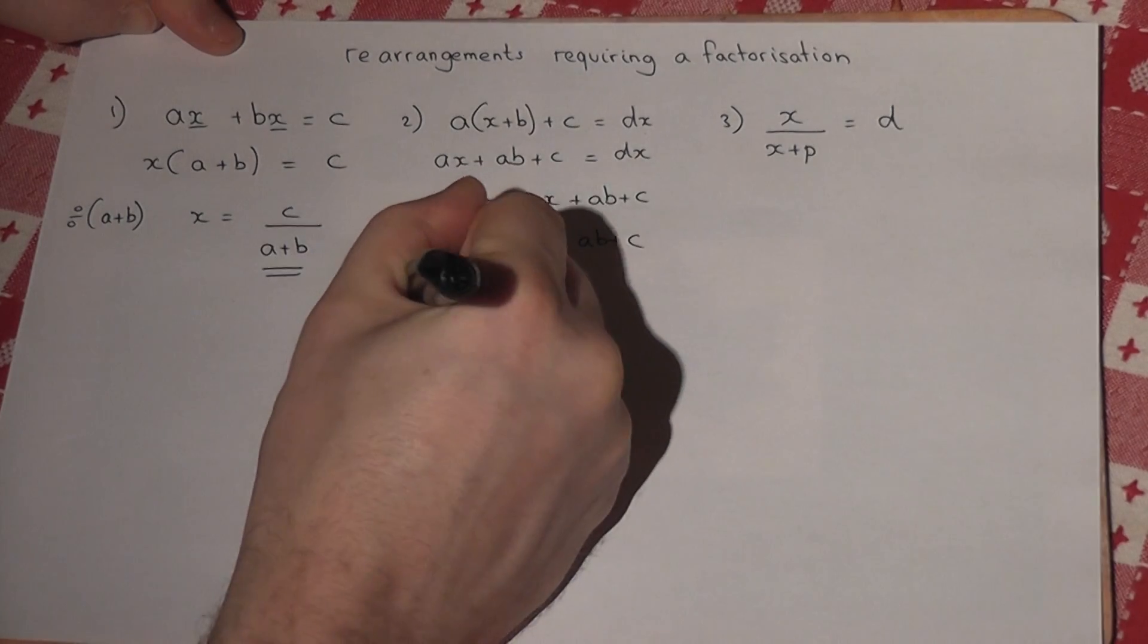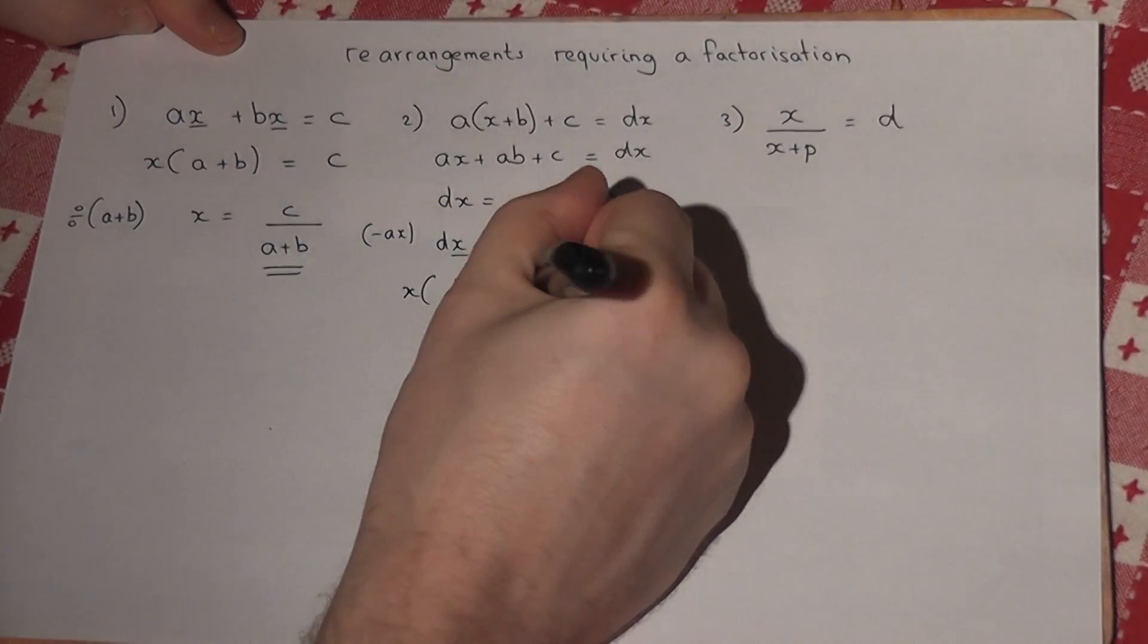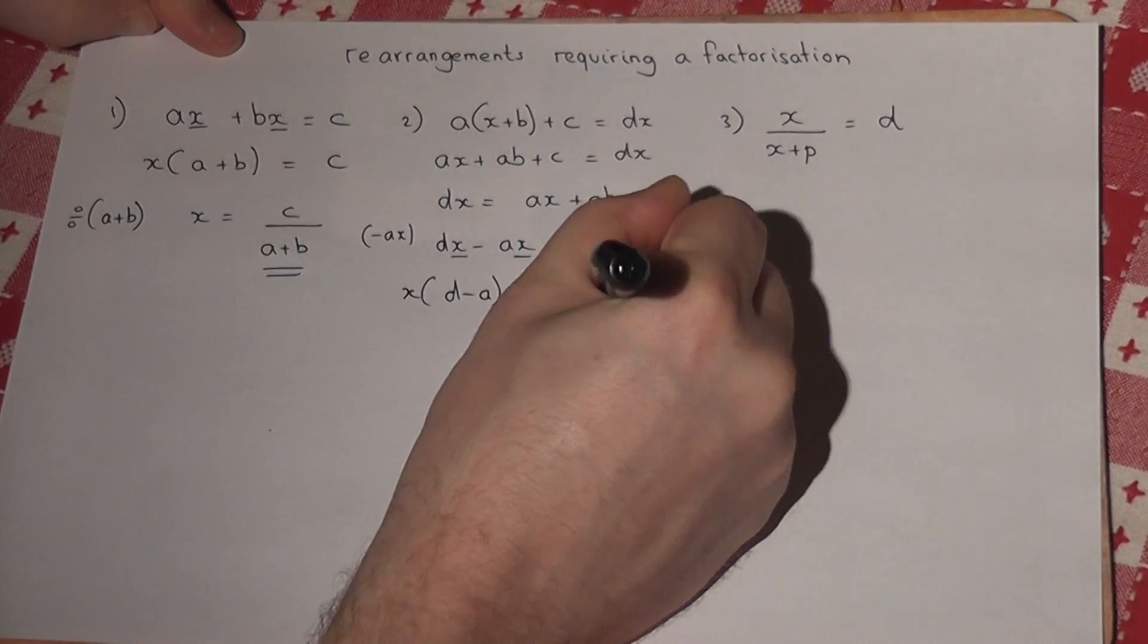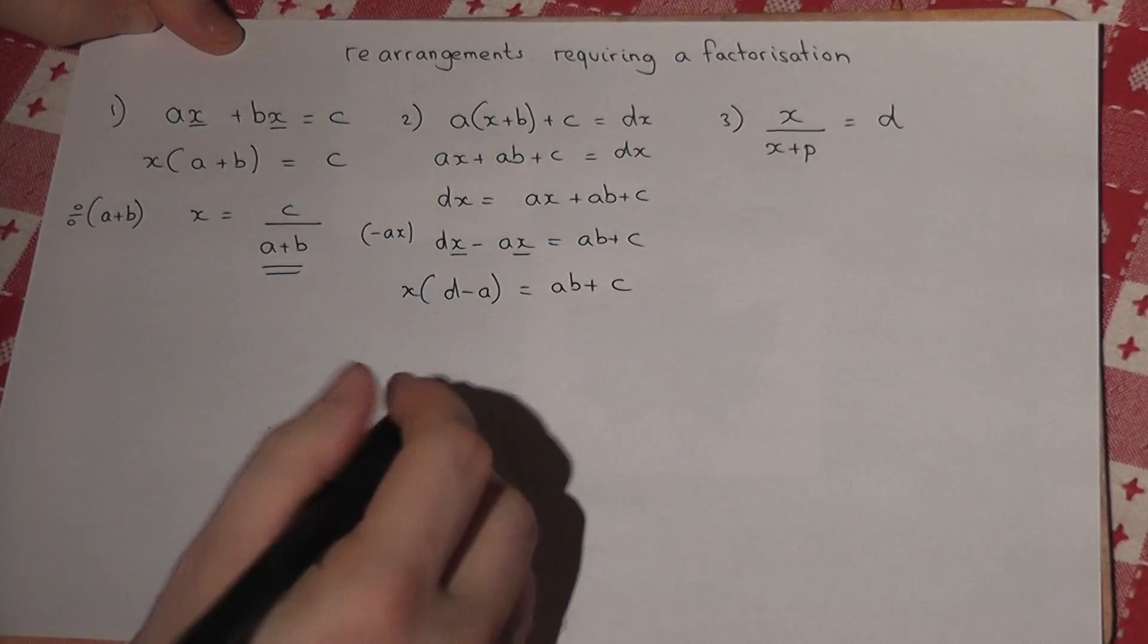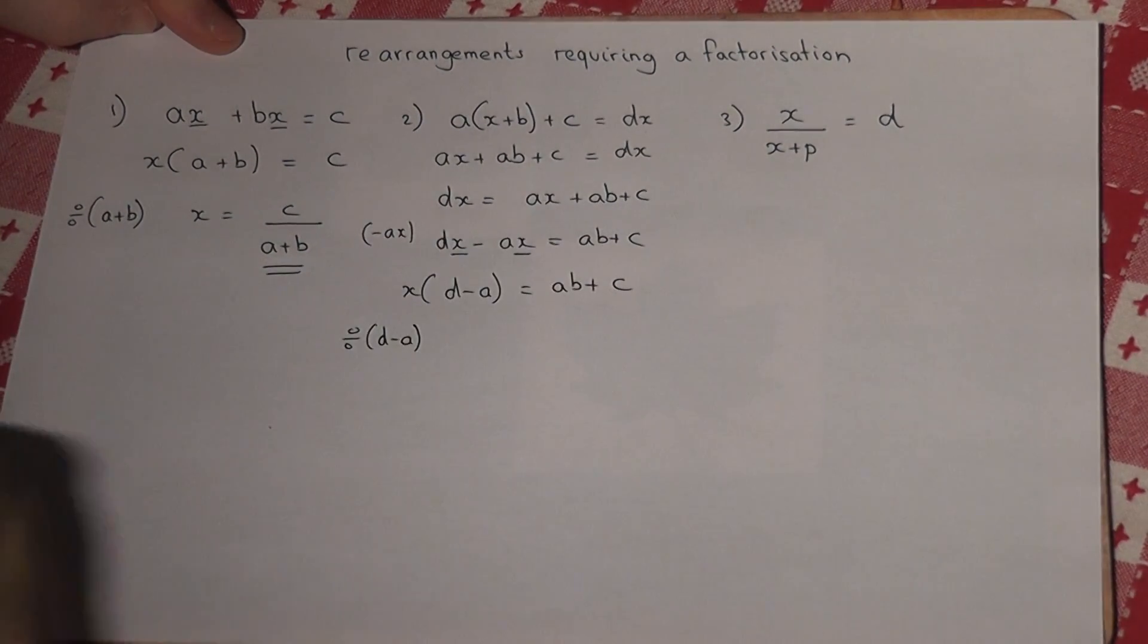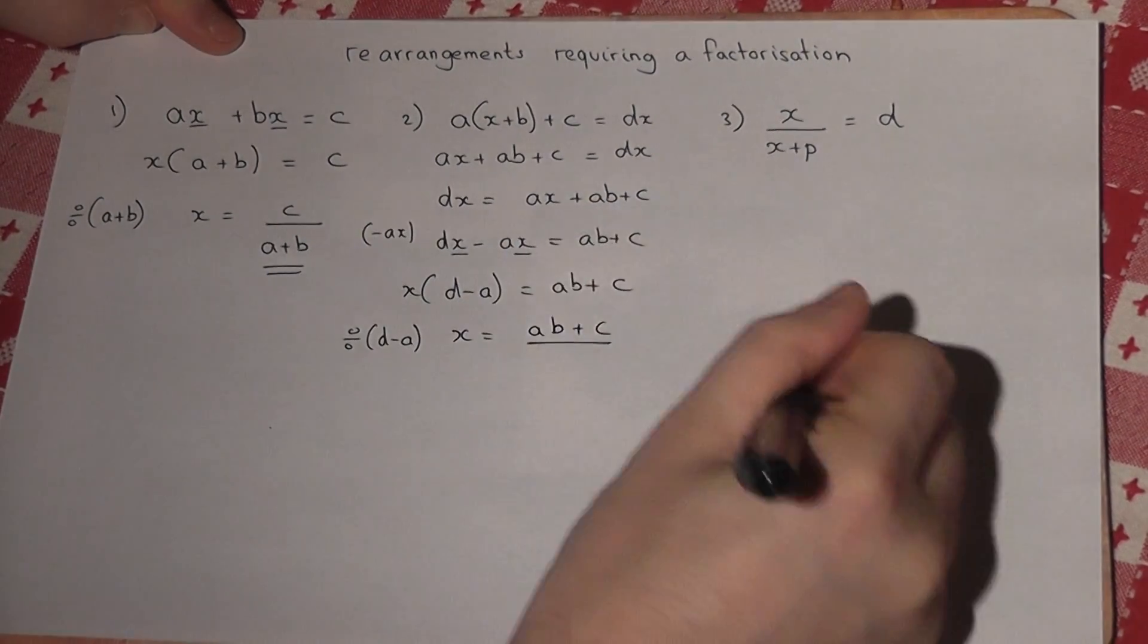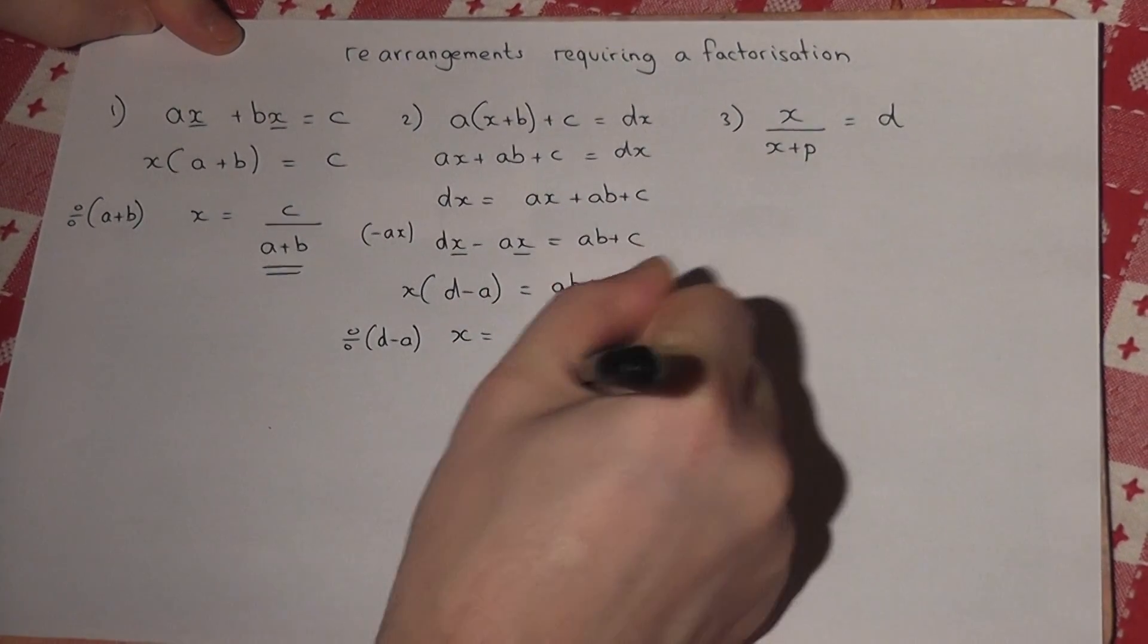So x(d - a) = ab + c, and then divide by the factor d - a, so x = (ab + c)/(d - a).